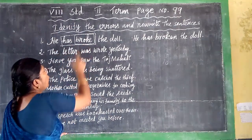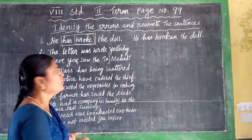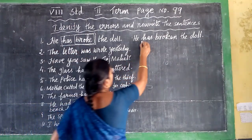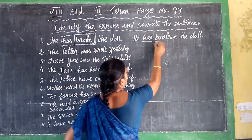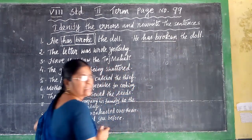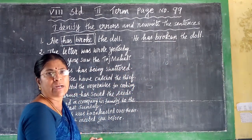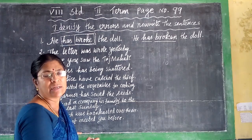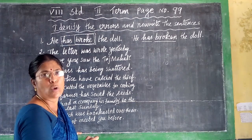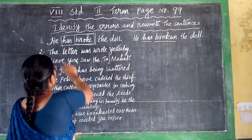'He has broke the door' is wrong because 'has' is followed by only the 3rd form of the verb. So the correct answer is: 'He has broken the door.'